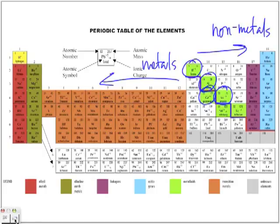Just to remind you: the numbers on the side — 1, 2, 3 — are the periods. Period number 1 is the first row, period number 2 contains all elements in the second row, and period number 3 contains all elements in the third row.